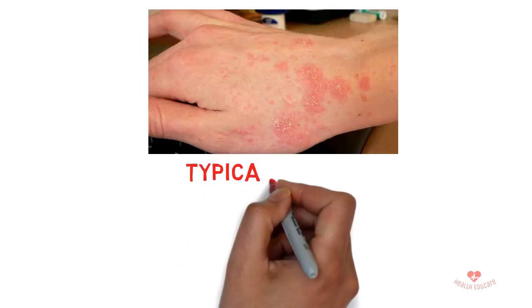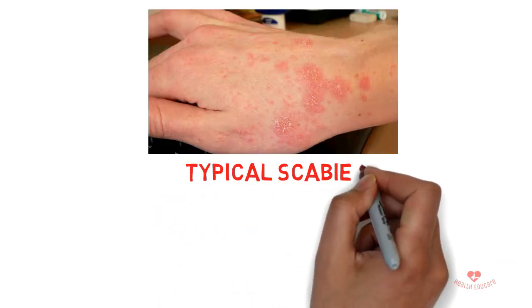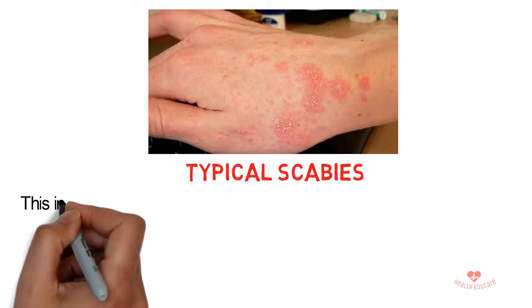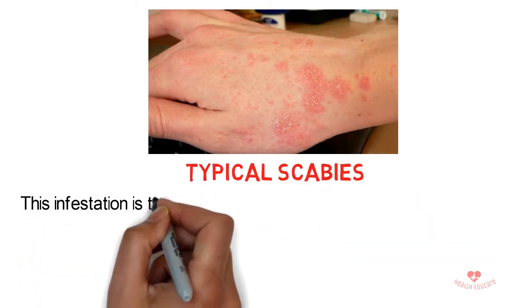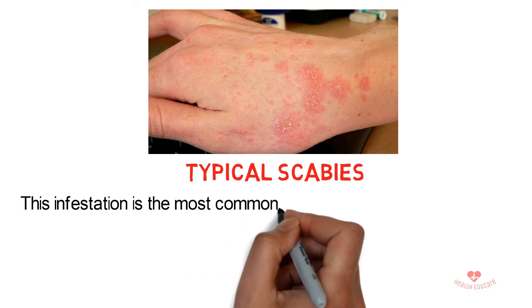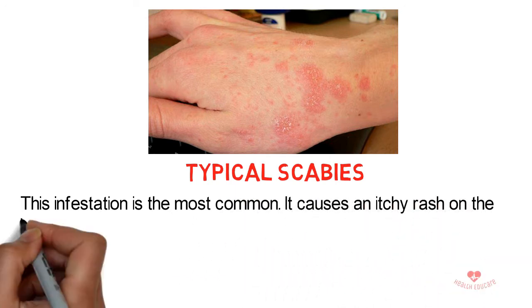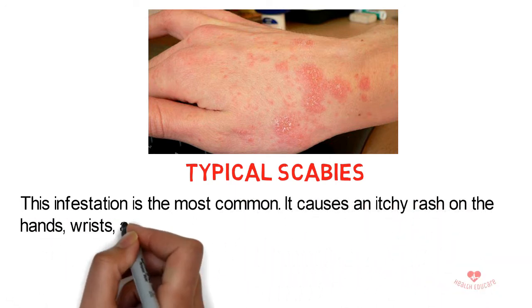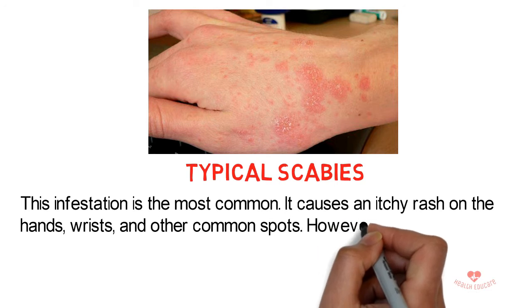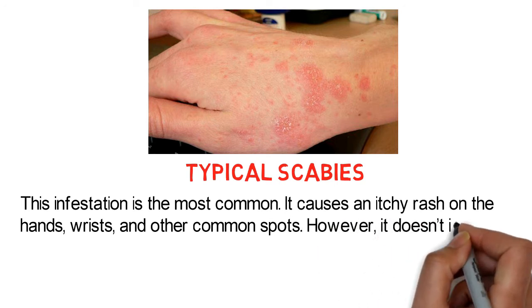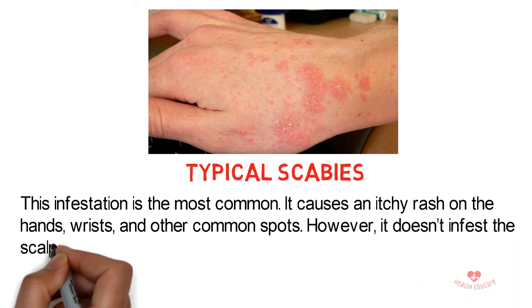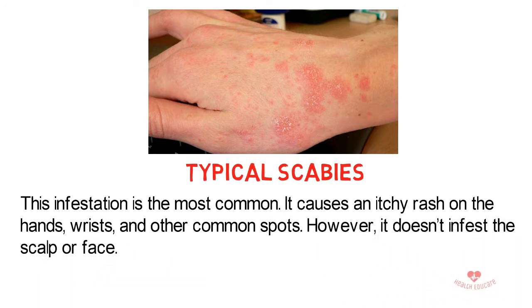1. Typical scabies — this infestation is the most common. It causes an itchy rash on the hands, wrists, and other common spots. However, it doesn't infest the scalp or face.